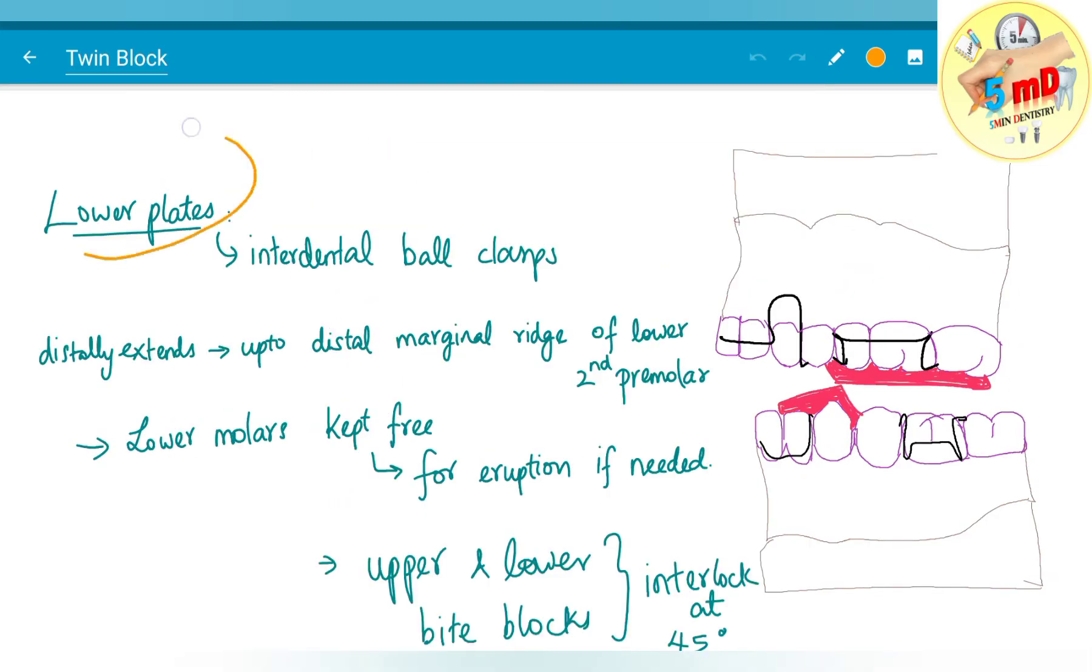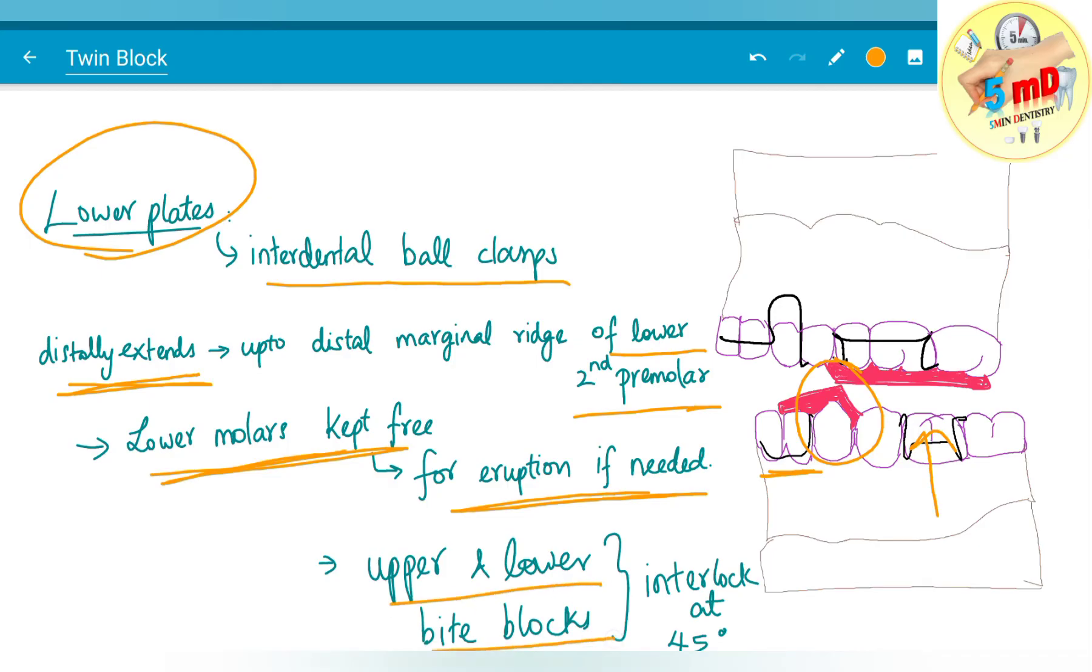When you compare with lower plates, it contains interdental ball clasps and distally extends up to the distal margin of the lower second premolar. The lower molars are kept free for purpose of eruption if needed. And upper and lower bite blocks interlock at 45 degree angle.